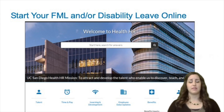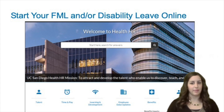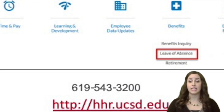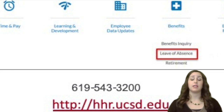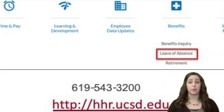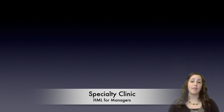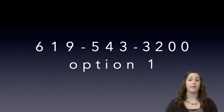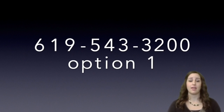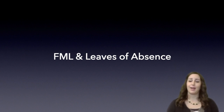We've gotten through most of the basics of FML. How can you reach us? Health Human Resources has a very user-friendly website — just go to hhr.ucsd.edu, click on Benefits, then Leave of Absence, and answer the questions provided to submit a leave request. Once we have the information, we can help both the employee and you with any questions you may have. We will also be offering an FML for Managers workshop that will provide more information regarding the various leave types and roles and responsibilities. You can always reach out to the leaves team by phone by calling 619-543-3200, option number one. Thanks for taking the time to learn about FML and Leave of Absence, and I hope to hear from you soon.